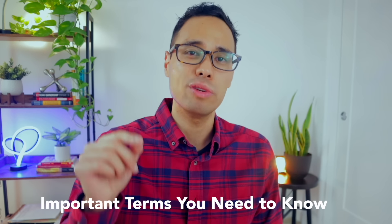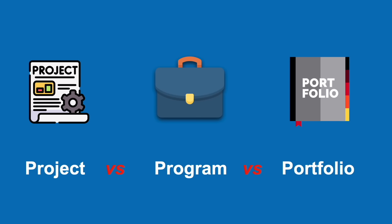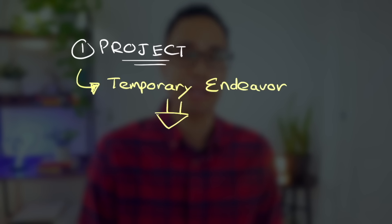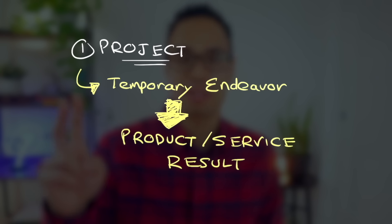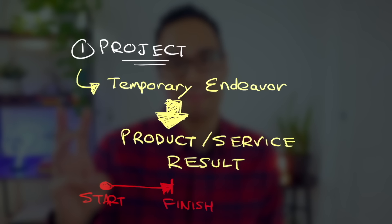There are a few important vocabulary terms that you need to master, and that is the difference between a project, a program, and a portfolio. A project is any temporary endeavor performed to create a specific outcome, which could be a product, a service, or even a result. It's temporary in nature, which means that it has a planned start and a planned finish date to complete all of the work required to produce that final product.